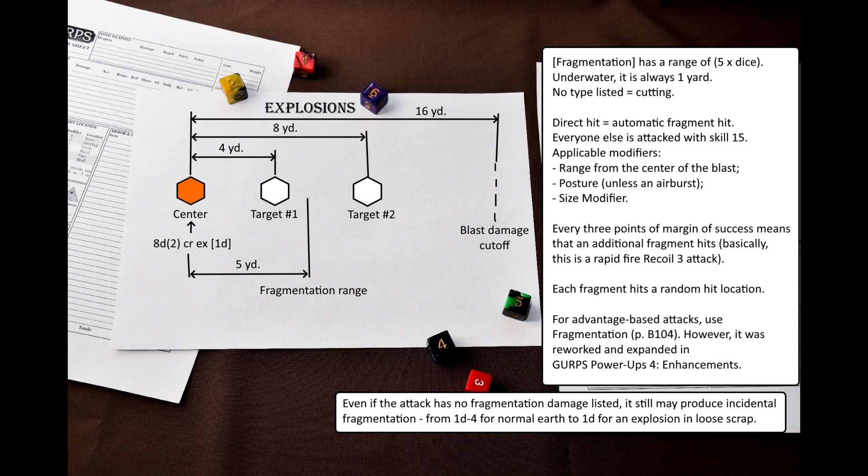Speaking of that, let's talk about fragmentation in more detail. When looking at an explosive weapon stat block, you might see a number of dice in brackets. This is fragmentation damage. However, if there is no damage number in the brackets, that doesn't mean that there won't be any fragmentation. Any explosion can still create some fragments, if there is any loose or frangible material at the explosion site. Such incidental fragmentation damage ranges from 1d-4 for ordinary earth to 1d for an explosion on loose scrap. Fragmentation affects everyone within 5 times dice of fragmentation damage yards from the center of the explosion. Pyramid 3.26 says that underwater fragmentation has a maximum range of 1 yard, regardless of damage.